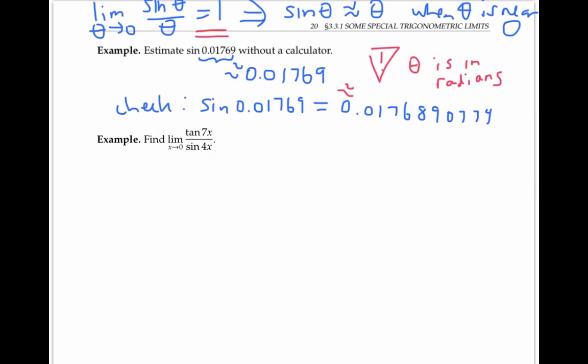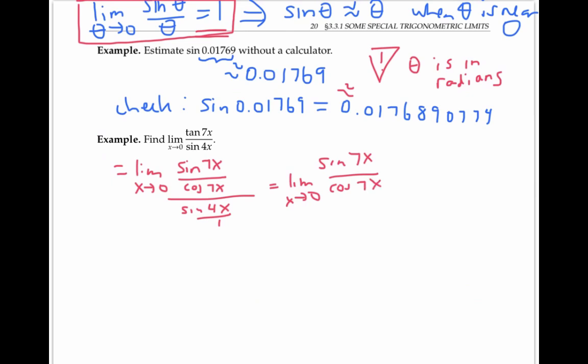We can use this same limit fact again in the next example to calculate this complicated limit as x goes to zero, the limit of tan of 7x over sine of 4x. So when I see tangents and sines in an expression, I'm always tempted to rewrite things just in terms of sine and cosine. So I'm going to do that first. I'm going to rewrite tangent as sine over cosine, that's still divided by sine of 4x. And now I'm going to flip and multiply to get sine of 7x over cosine of 7x times one over sine of 4x.